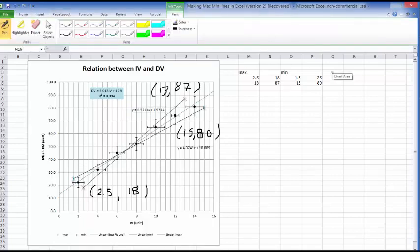The way that you would do that is to say your uncertainty in the slope would simply be that maximum slope, which is 6.57, subtract the minimum slope, 4.07, and divide that range by 2, and you'll get the uncertainty in the slope.